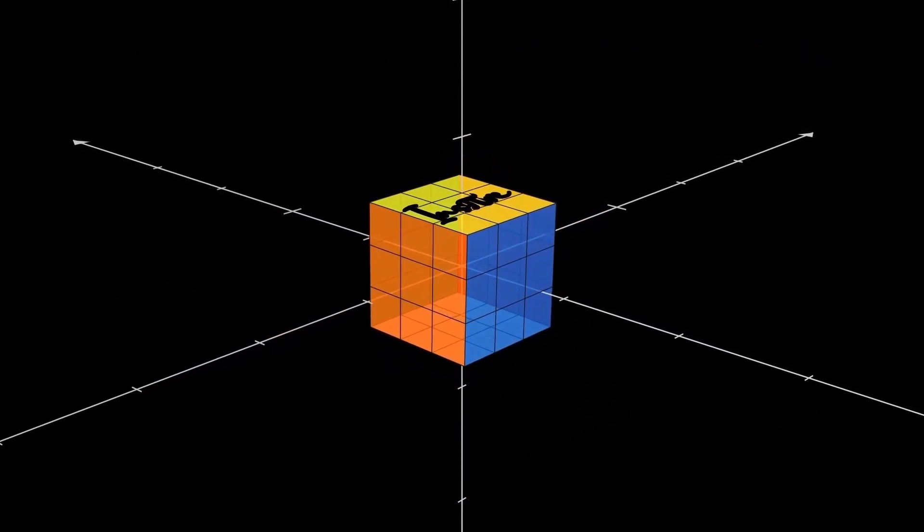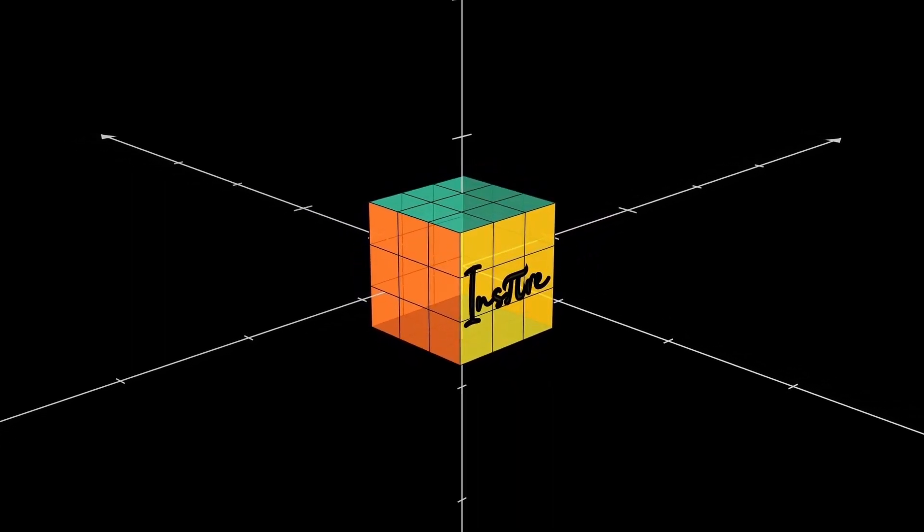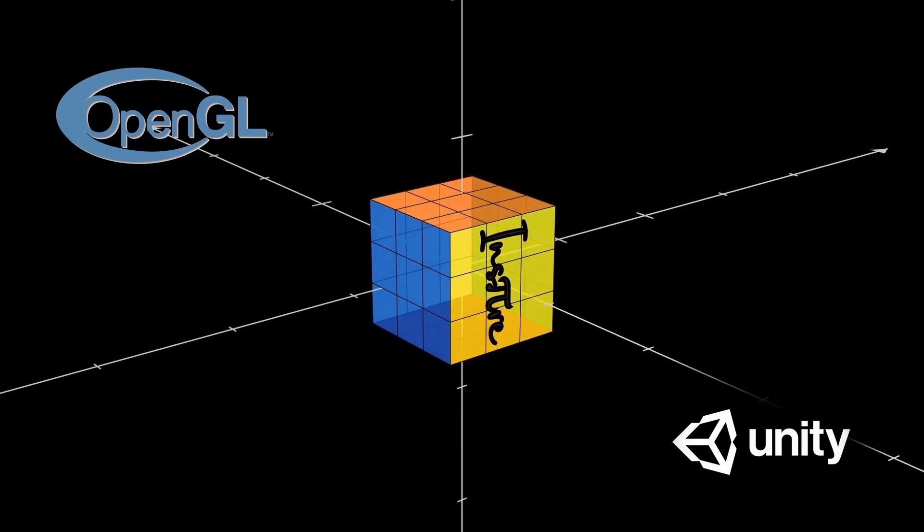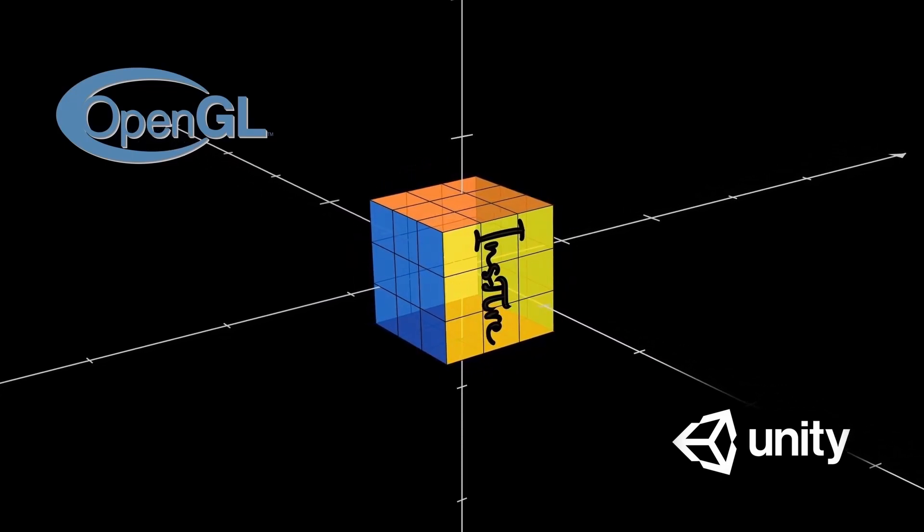And quaternions have been used in computer science for 3D vector rendering software such as OpenGL and 3D game engines such as Unity, specifically for the rotation of objects.